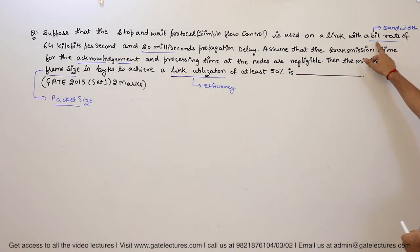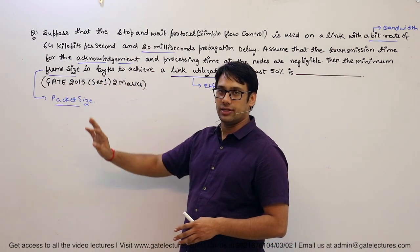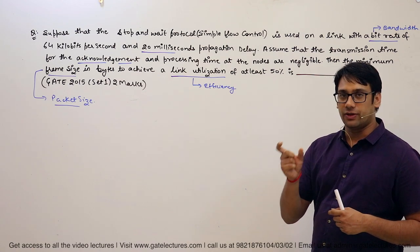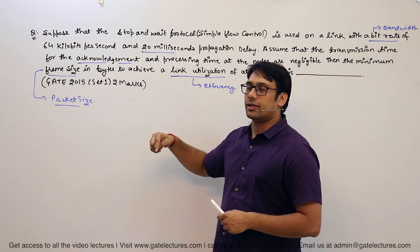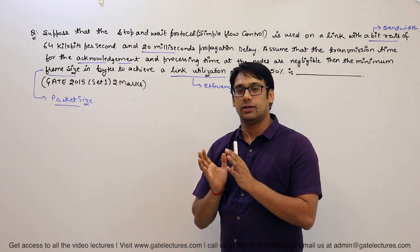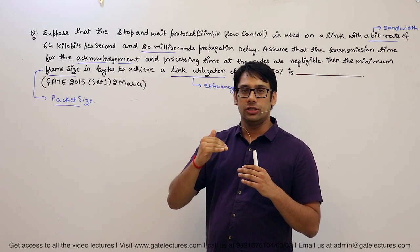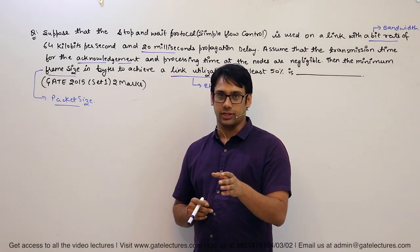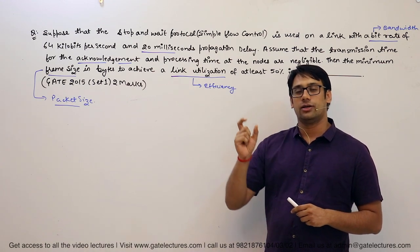A few terminologies are important here. First, bit rate means the bandwidth of the network. Second, frame size and packet size are the same here. Packet is a generic term, but when a packet is in the data link layer it is called a frame. So here, because we are discussing the data link layer, the packet is called a frame. Packet is generic across network layer, transport layer, and data link layer, but each layer has its own specific name.